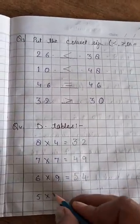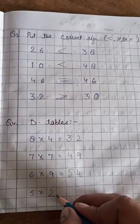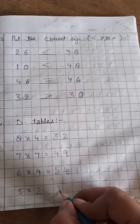Next. 5 twos are? 5 twos are? Students. Till the table till 2. Till the table of 5 till 2. 5 twos are? 10.